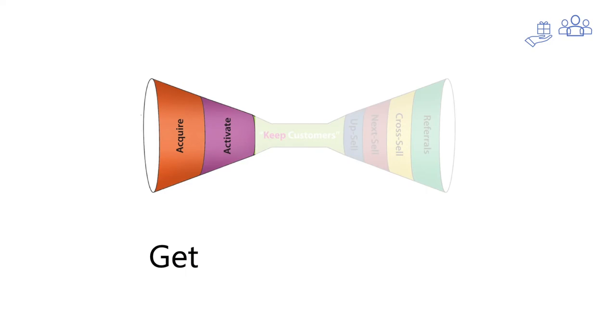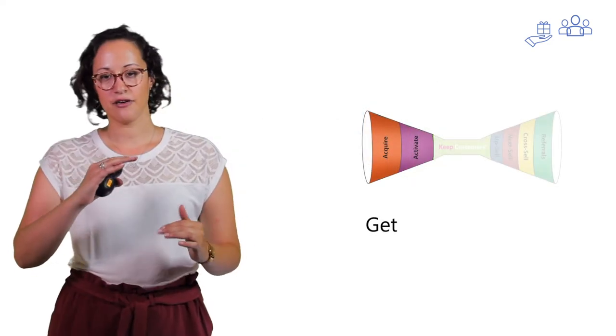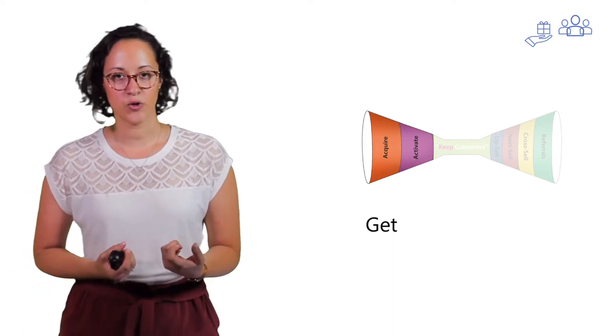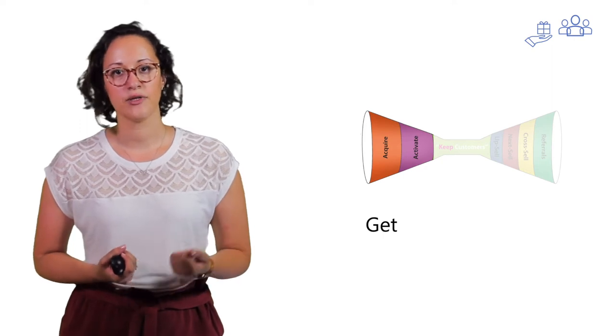We will start with the get part. This part starts with a funnel that is quite wide and it narrows down. You can think about when you are on Facebook and you see a Facebook ad, not everybody will click on it, so it will narrow down.